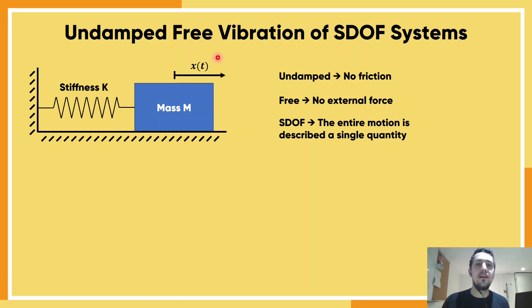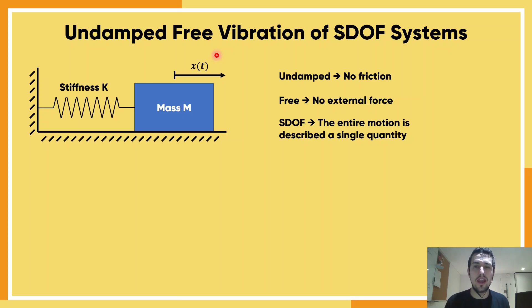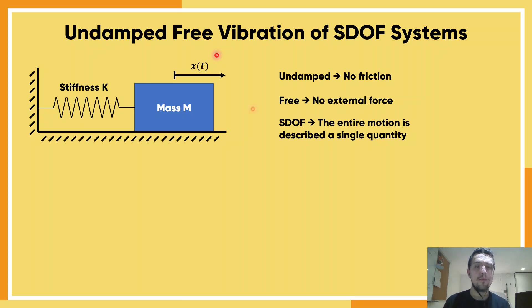The idea is to find x(t), what we call the equation of motion — an equation that describes the position of the mass at every point in time, so that we can analyze our structure at every point in time. That's the objective here.